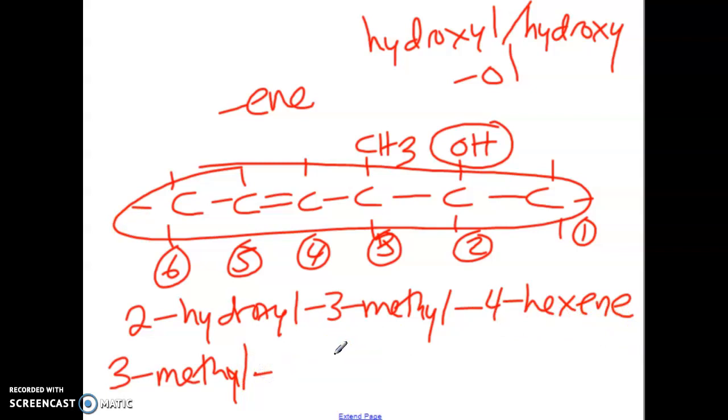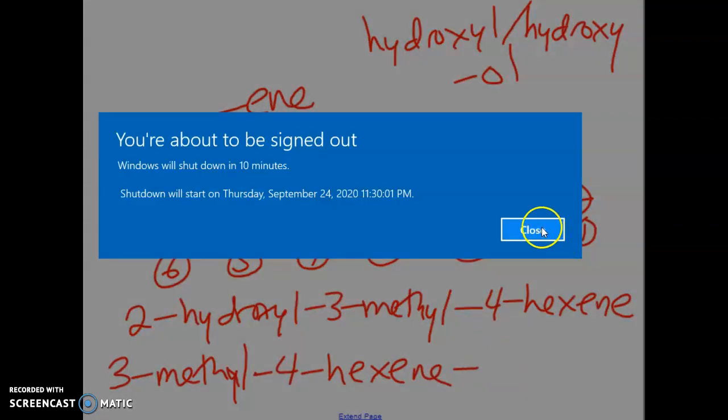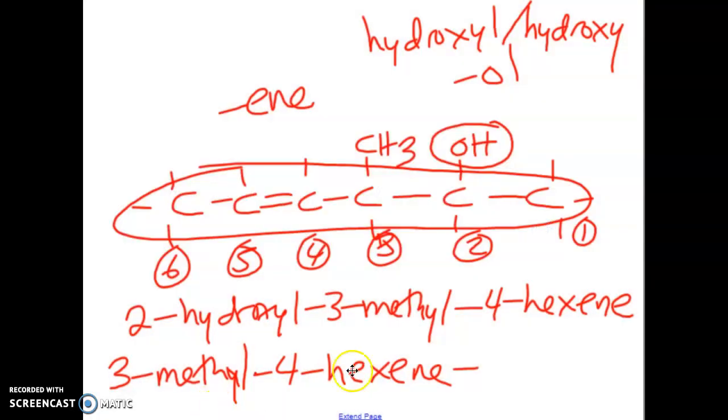And then we would have both of our suffixes that are coming into play here. Now the order that the suffix is placed in has to do again with priority. So first we would have the four-hexene suffix, but we also want to include the alcohol. So we would do two-all.